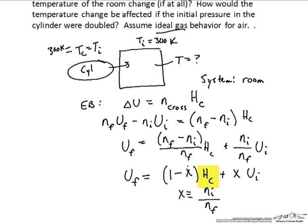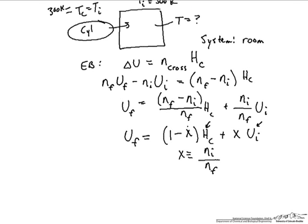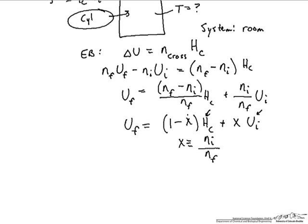If the enthalpy of the cylinder is higher than the initial internal energy per mole of gas in the room, then we expect the internal energy in the final state to also be higher than in the initial state. So based on whether h_c is higher or lower than u_i, we can determine whether u_f is higher or lower than u_i. Let's examine the relative values of h_c and u_i.